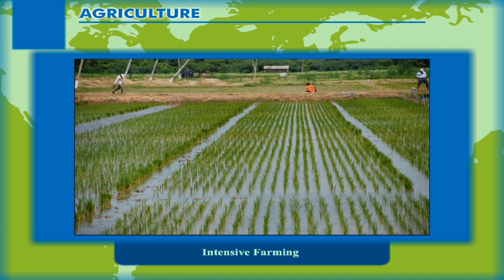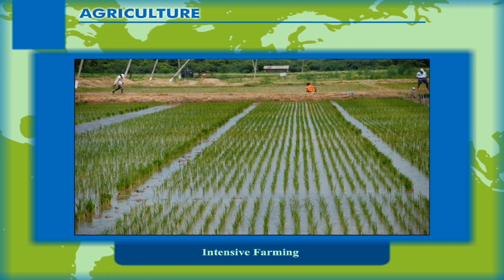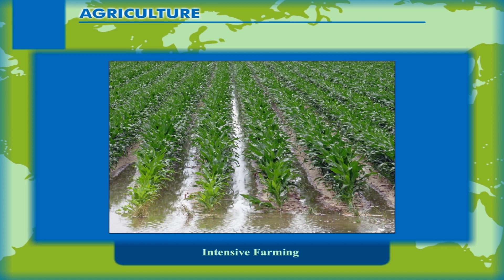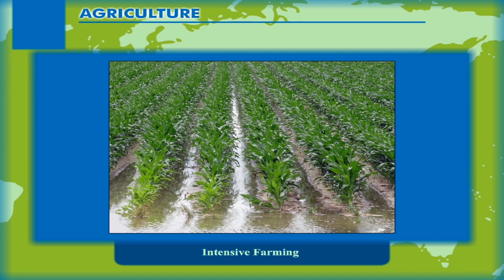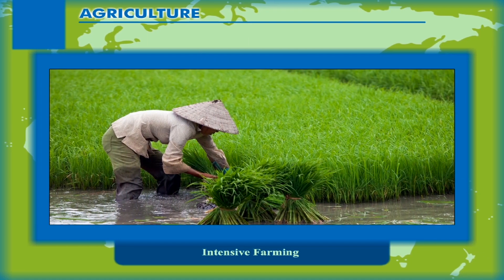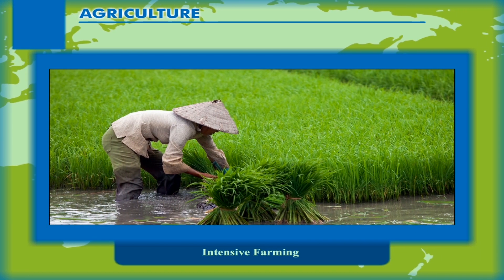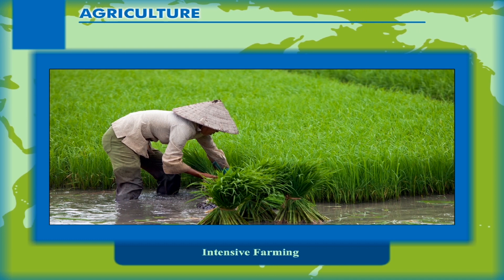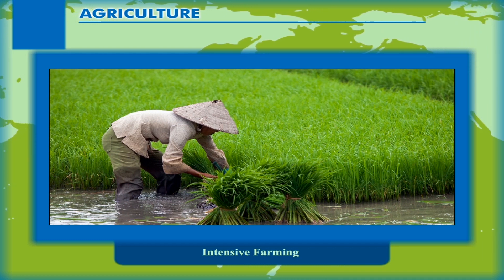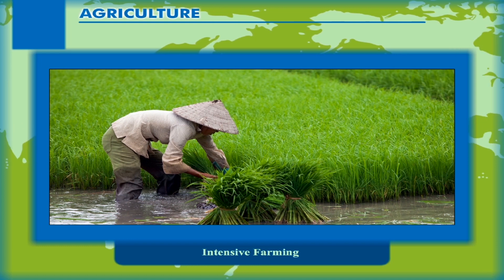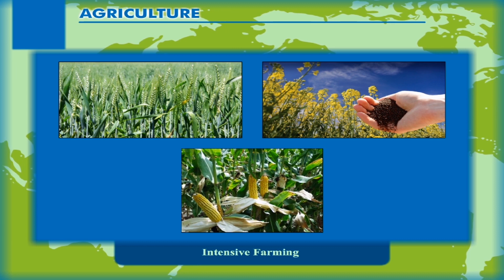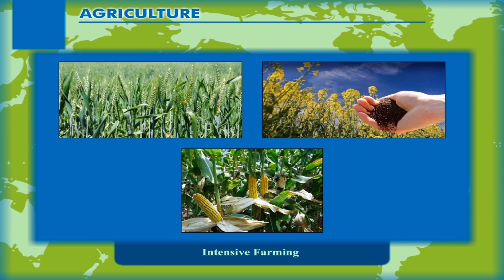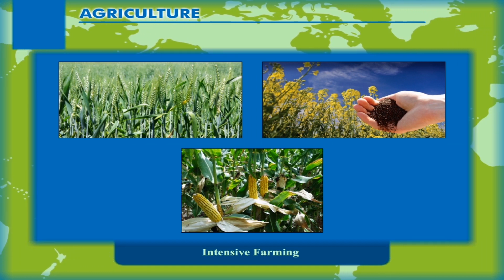In intensive farming, even from a small piece of land, farmers get a very high yield by using good quality seeds. Besides, more than one crop is taken from the same piece of land because of fertile soil and good climate. It is prevalent mostly in the monsoon regions of South, Southeast, and East Asia. Rice is the main crop; besides wheat, maize, pulses, and oil seeds are also grown. A variety of crops are usually grown by a farmer because most of the produce is for their own consumption.